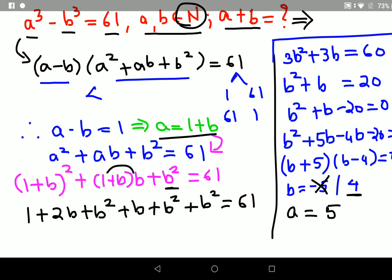So from here I can say a plus b, that is 5 plus 4, that gets you 9. 9 is the answer for this particular question. So I hope you have understood how to solve these kind of questions. The trick is to try to factorize your number when you are stuck with your variables.